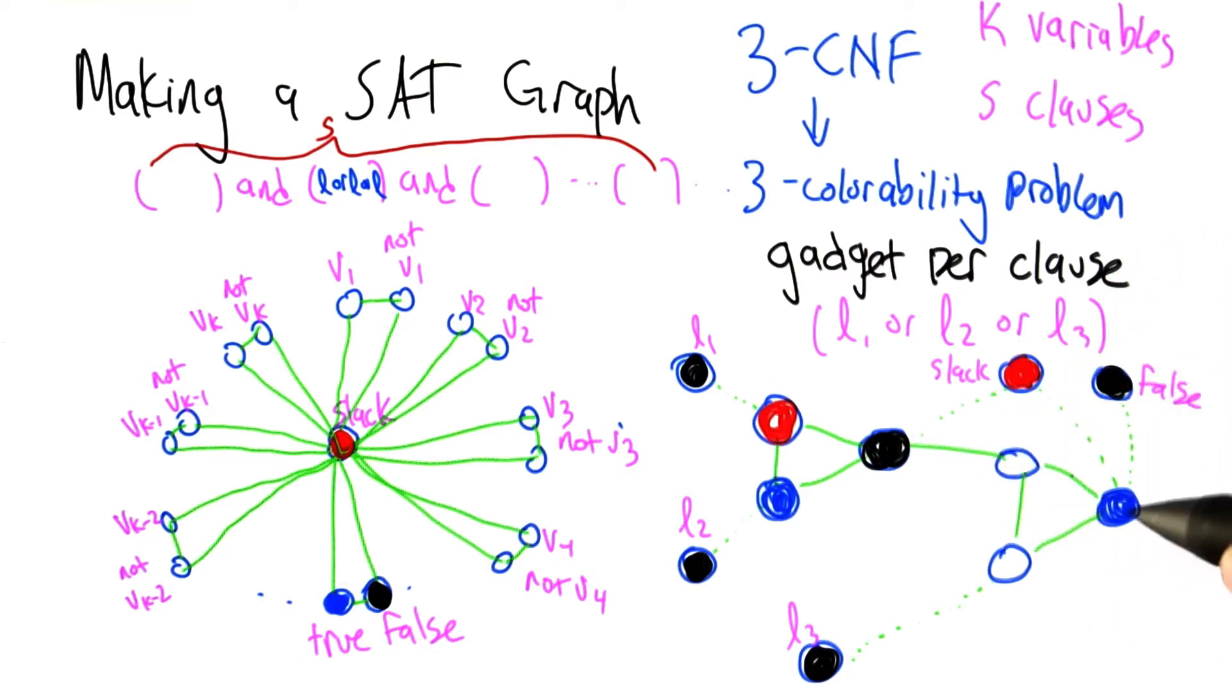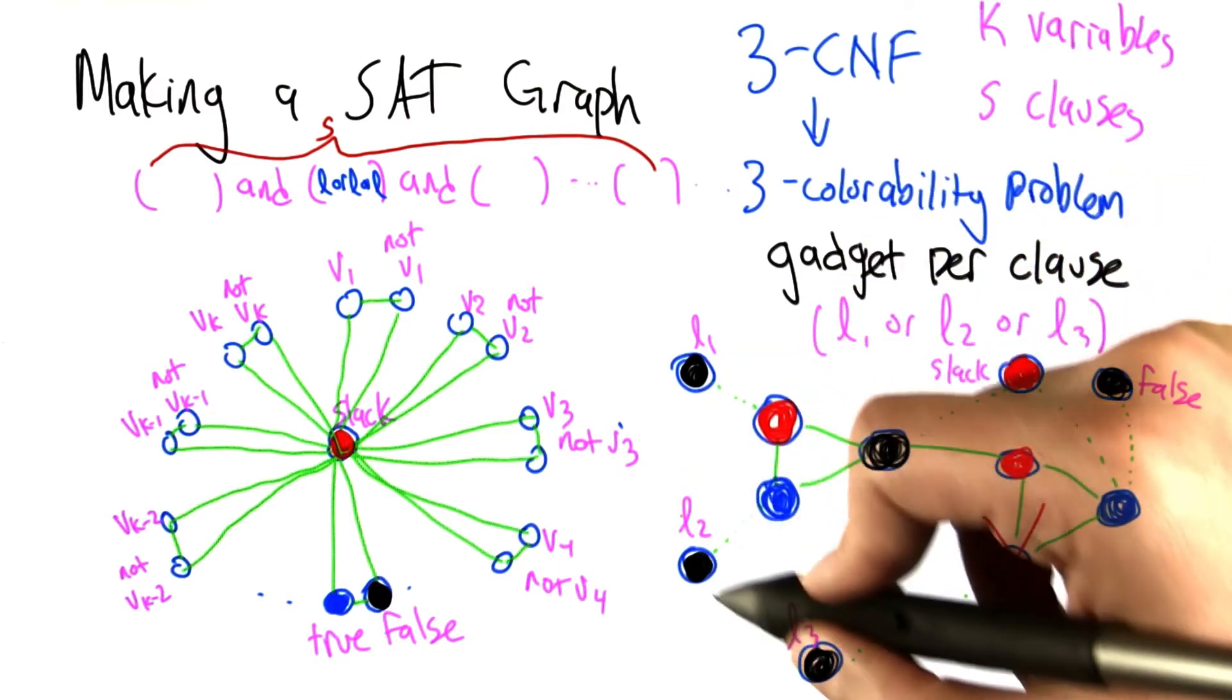Now this node is connected to blue and black, so it has to be red. And this node is connected to red, blue, and black, so we are in trouble. So the graph was not colorable when these three literals are all black.